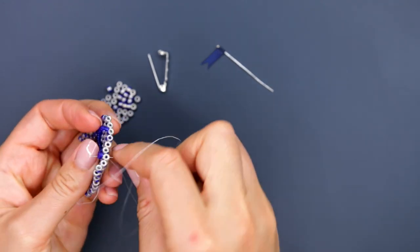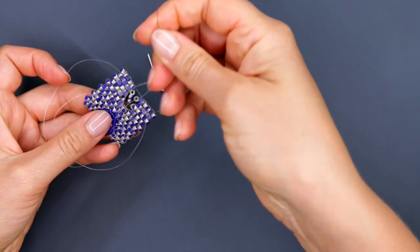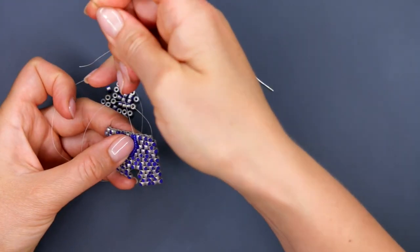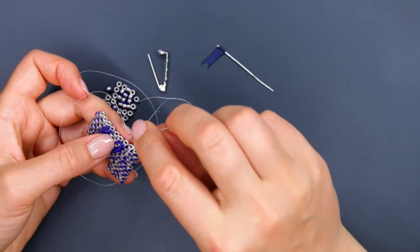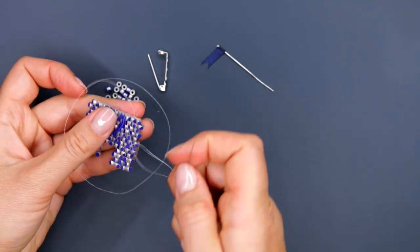After that, I advise to go through the decorative seed beads once more. Tighten and arrange accurately everything. This end of the thread you can fix in usual way, hiding the knots between the base beads.